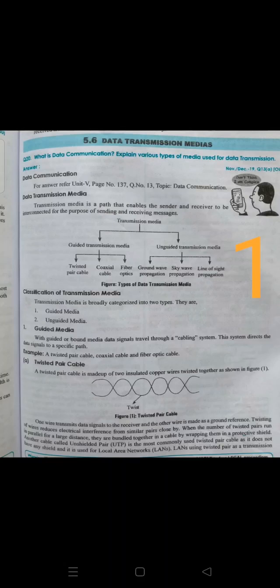Twisted pair cables are used to transmit both analog and digital signals. Advantages include being very inexpensive and widely used for telephone systems and residential internet access. Disadvantages include: it is not suitable for broadband connections, it has a high error rate, it can break easily, and it cannot travel long distances.